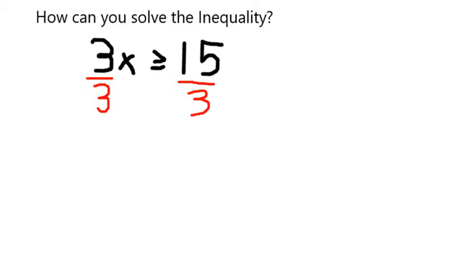In this case, I'm going to divide both sides by 3, and that's going to leave me with x greater than or equal to 15 divided by 3, which is 5.